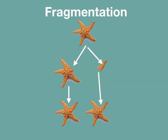Fragmentation occurs when an organism splits or loses parts of its body. The remaining parts can grow and form a new organism. This can be seen in starfish. When they lose an arm, they can grow it back and the separated arm can grow into a new starfish as well.